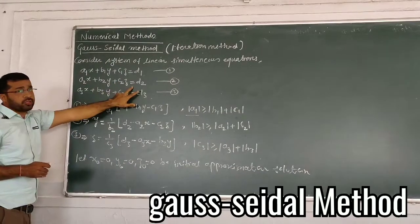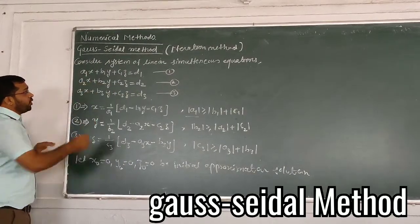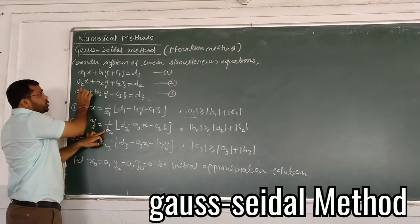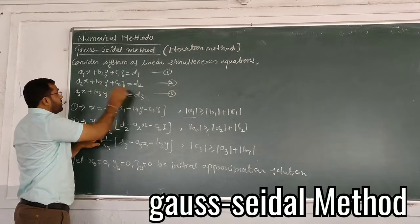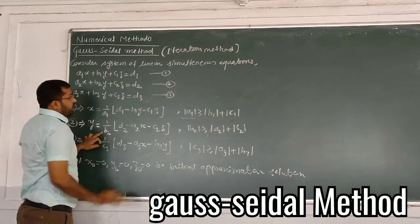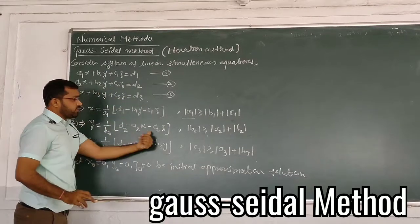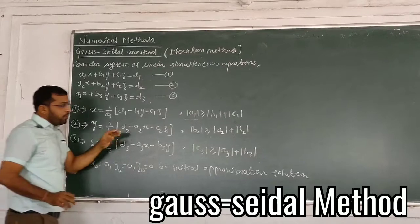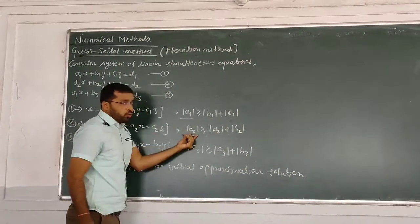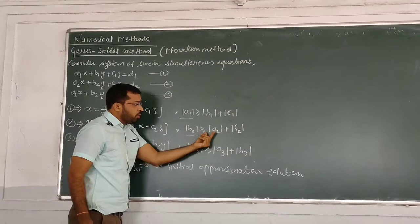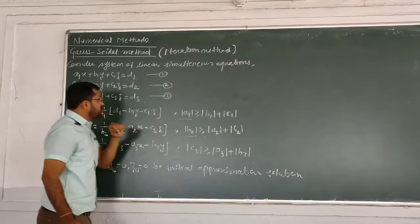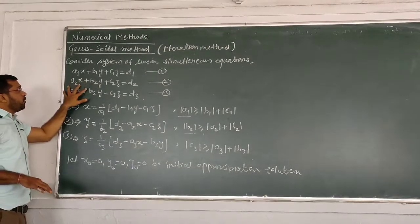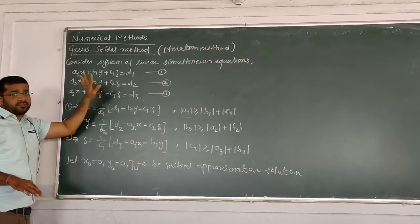If we use equation number 2 to find the value of y, we rearrange to get y = (1/b2)(RHS − a2·x − c2·z). The condition here is that the modulus of b2 must be greater than or equal to the modulus of the sum of the coefficients of x and z — that is, |b2| ≥ |a2| + |c2|.